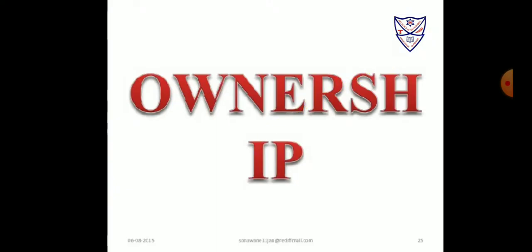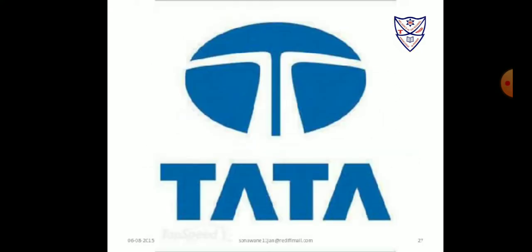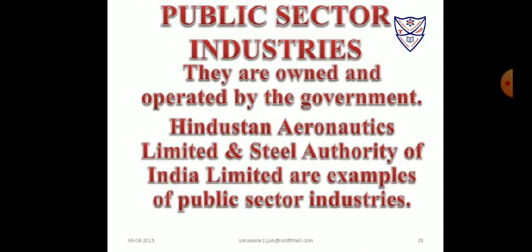On the basis of ownership, industries are classified into the following types. Private sector industry: a group of individuals or one individual operates such industries — for example, Tata. Public sector industry: the government owns such industry, such as Steel Authority of India Limited (SAIL) and Hindustan Aeronautics Limited (HAL).